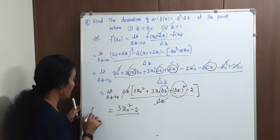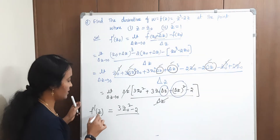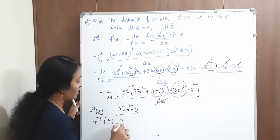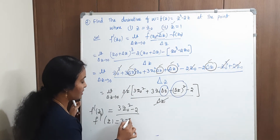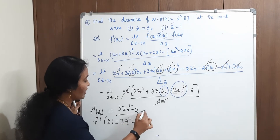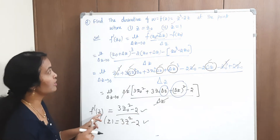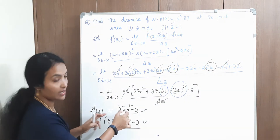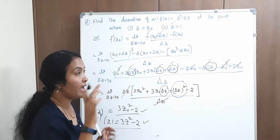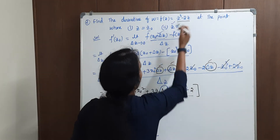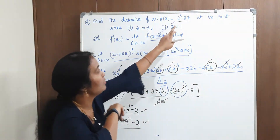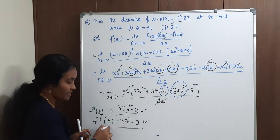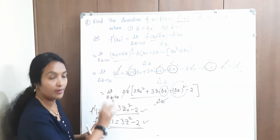So f dash of z naught is 3 z naught squared minus 2. If we write z in place of z naught, f dash of z equals 3z squared minus 2. Looking at this directly: z cube minus 2z differentiated directly gives 3z squared minus 2. The definition method gives the same answer as the direct differentiation. Correct, right? Done.